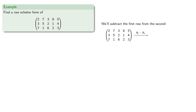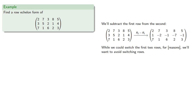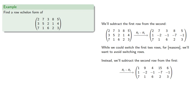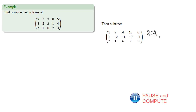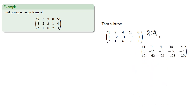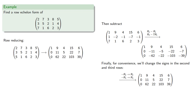We can begin by subtracting the first row from the second. While this does give us a leading entry of 1 and we could switch the first two rows, for reasons we'll want to avoid switching rows. Instead, we'll subtract the smaller number from the larger — meaning we subtract the second row from the first. This gives us a pivot of 1 in our first row, so now we can do the usual Gaussian elimination: subtract the first row from the second, and 7 times the first row from the third. While we could have negative leading coefficients, for convenience we'll change the signs in the second and third rows, giving us our first step in the row reduction.